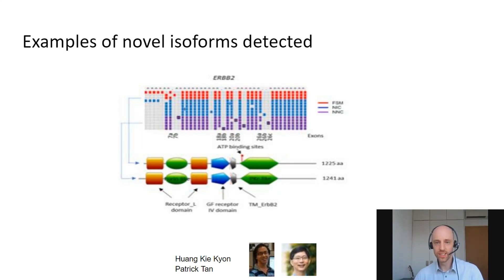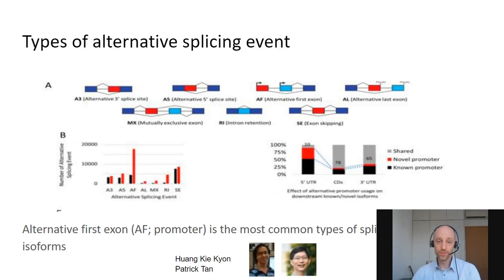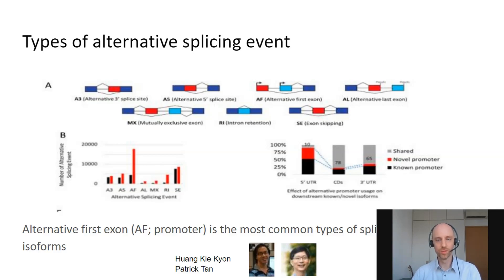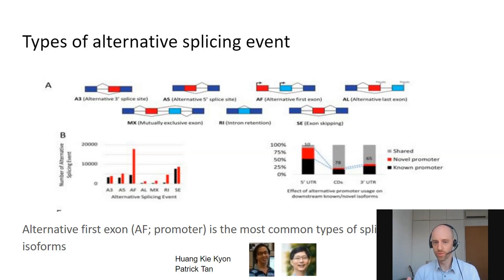Going back to the ERBB2 example, you can also see what we get in terms of new isoforms — in red is what's annotated, and in blue and purple we can see the number of isoforms we observe that are not annotated. There is a huge diversity in addition to what's annotated. In terms of different types of splicing events — I've talked a lot about alternative first exons, but there are also alternative five-prime and three-prime splice sites, alternative last exons, intron retention, exon skipping, and mutually exclusive exons. With these data we look into all of those, but one thing we see is that alternative first exons — alternative promoters — seem to be the most frequent event we can observe. And similar to what we observed before, the choice of promoter impacts not just the five-prime UTR but also the coding sequence and the three-prime UTR, really indicating this close relationship between transcriptional regulation and the choice of isoform and gene product.